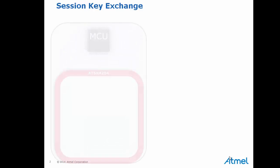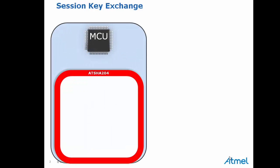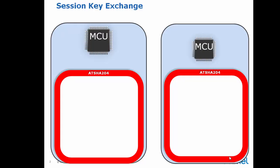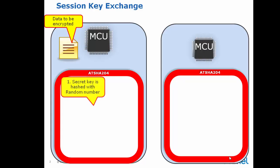In this example, we have two systems — one being the encrypting side on the left and the other on the right being the decrypting side. Of course, these can be reversed. Each side has an ATSHA 204 and a microcontroller. To encrypt the data, we will create a unique session key. That is done by hashing the secret key stored on the ATSHA 204 with a random number.